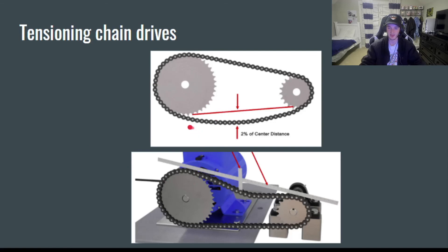Proper chain sag is very important, because if you have it too loose, it's not going to work properly. It's going to basically wear your chain down very quickly. And if you have it on too tight, it'll shoot off like a slingshot and probably hurt someone.